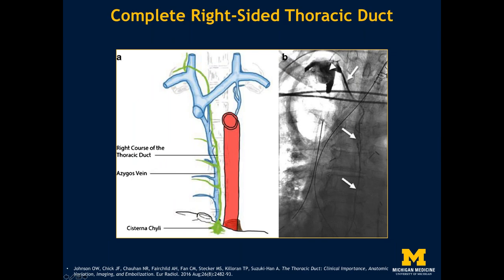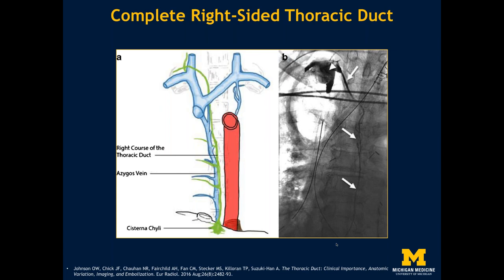In contrast, a right-sided thoracic duct has a cisterna chylae but the duct rises on the right side of the vertebral column and dumps into the right jugular venous angle. This variant is rare — I've only seen it once or twice, and Ravi and I saw one at Michigan within the last few months. Some of these variants are rare and you may never see them very frequently.